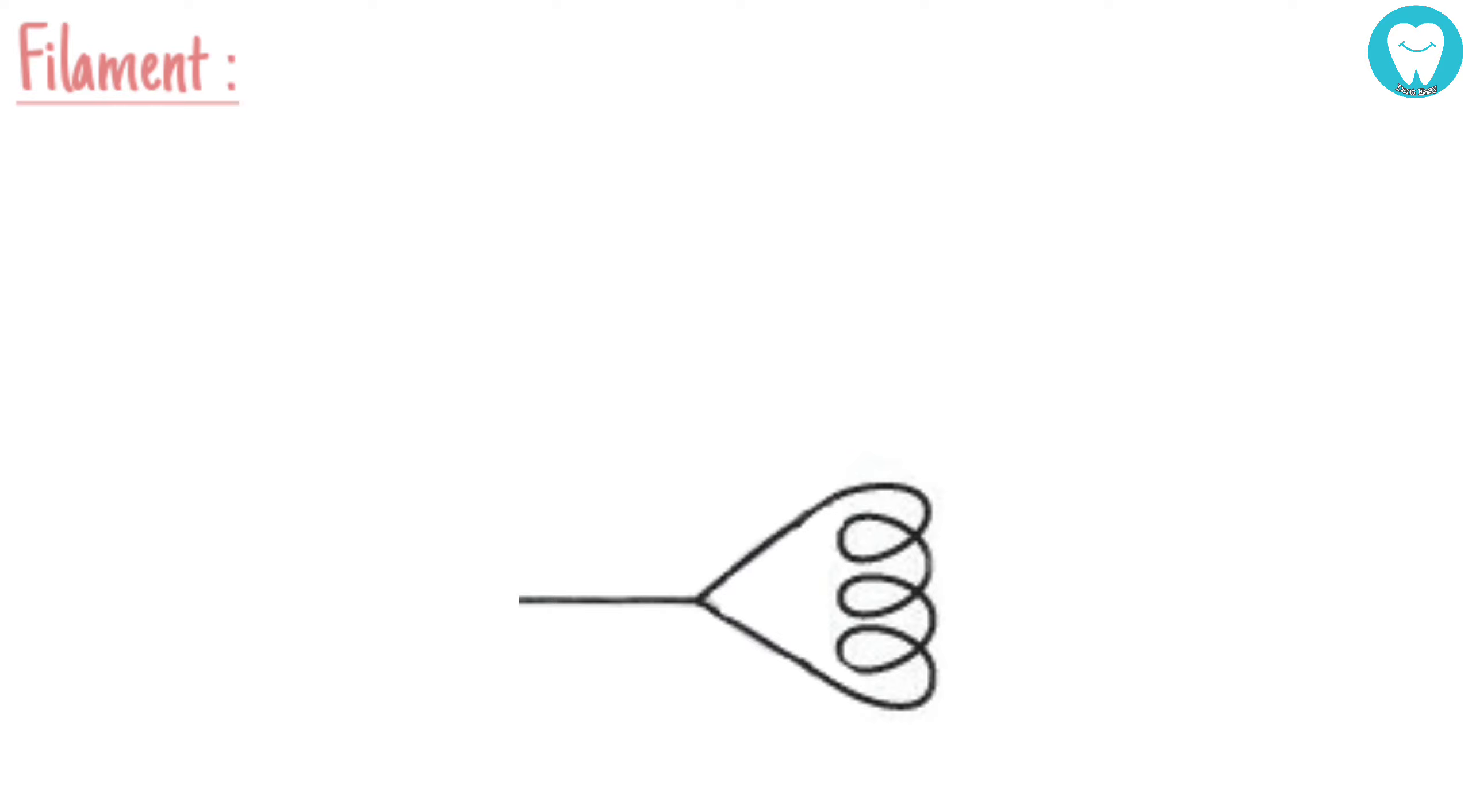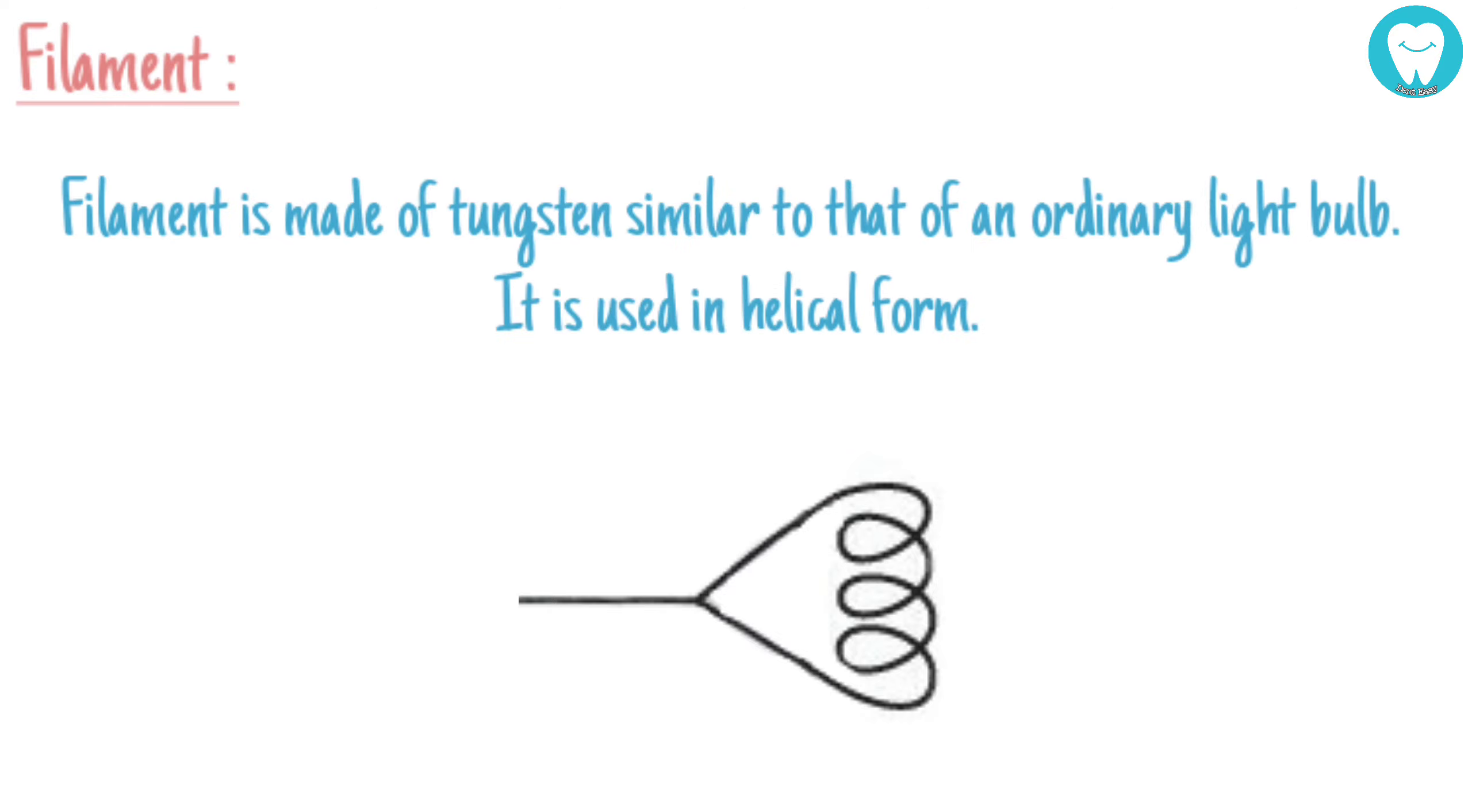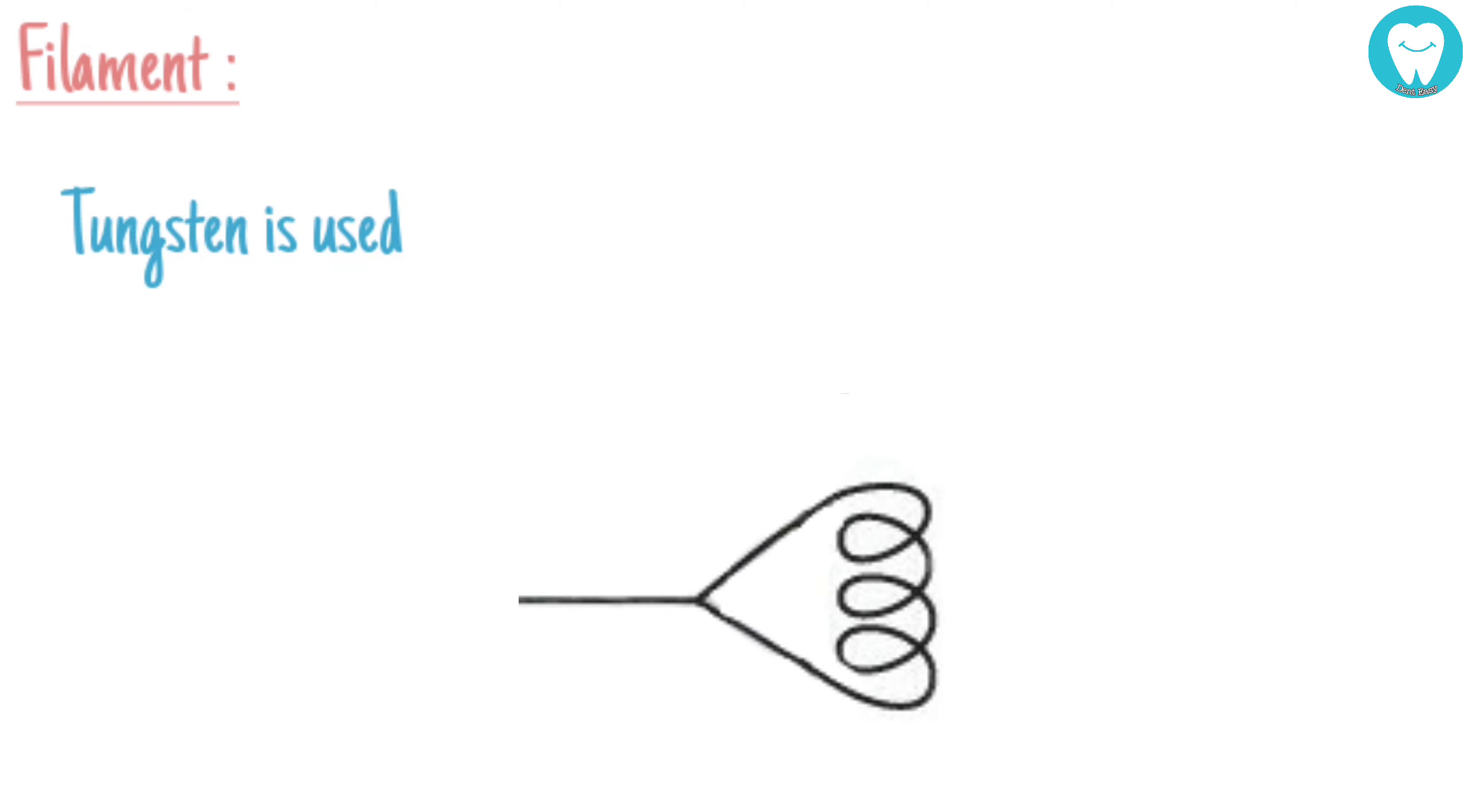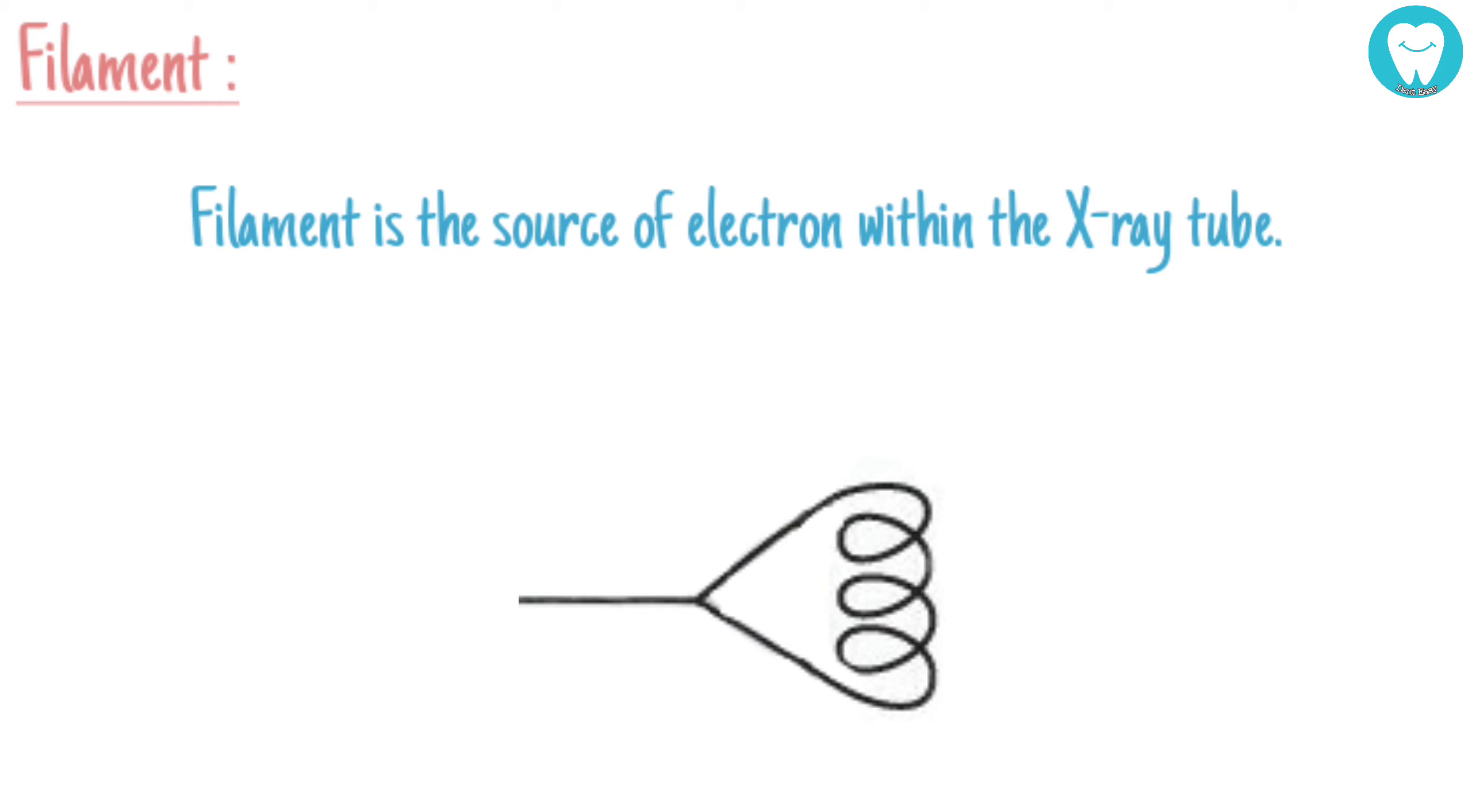The filament is made of tungsten, similar to that of an ordinary light bulb. It is used in helical form. Tungsten is used because it can be drawn into a thin wire that is quite strong. It is 2 mm in diameter and 1 centimeter in length. The filament is the source of electrons within the X-ray tube and is connected to the electric current.